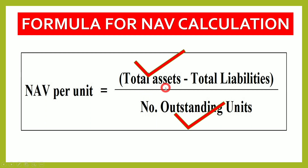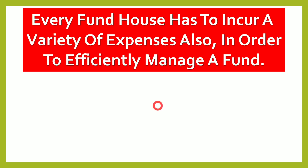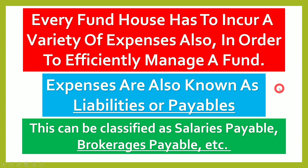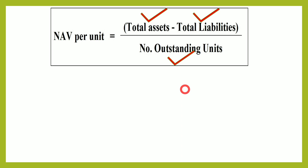Outstanding units are those units which have been issued to investors. Every fund house also incurs a variety of expenses to efficiently manage the fund. These expenses are also known as liabilities or payables, and can be classified as salaries payable and brokerages payable. These are considered external liabilities. With total assets, total external liabilities, and outstanding units all defined, our formula is now complete.